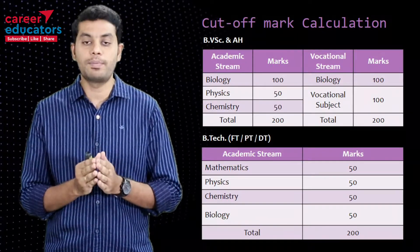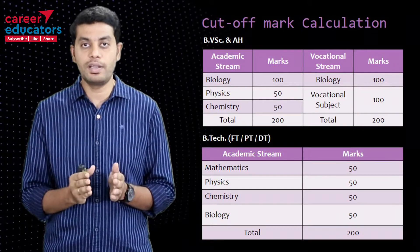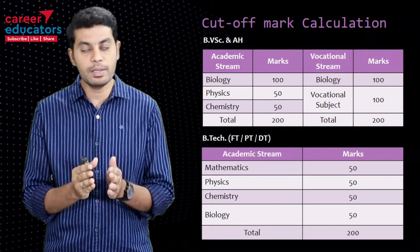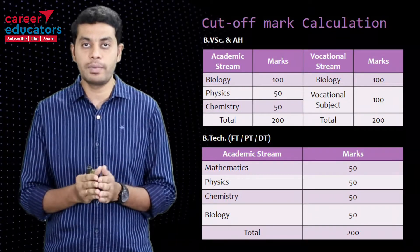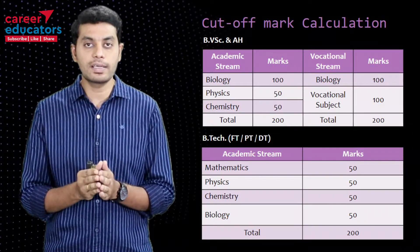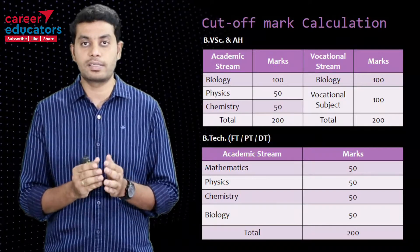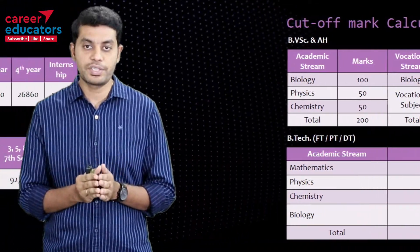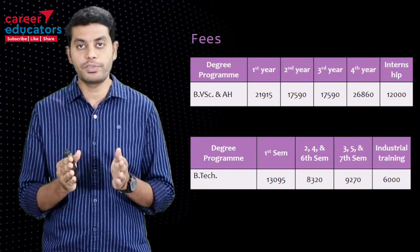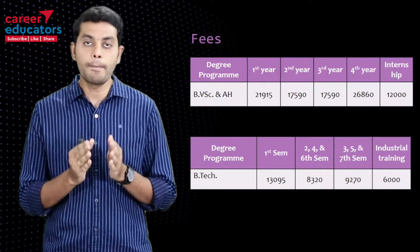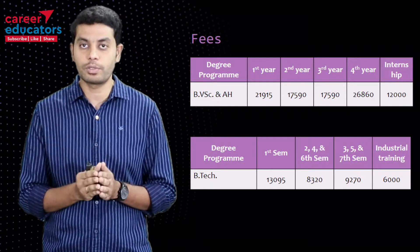For the B.Tech course, math, physics, chemistry, and biology — four subjects — each subject is 50 marks, totalling 200 marks as the cut-off mark. Next, we will see the fees. The BVSE course fees are approximately 21,000 and the B.Tech course fees are approximately 21,000.